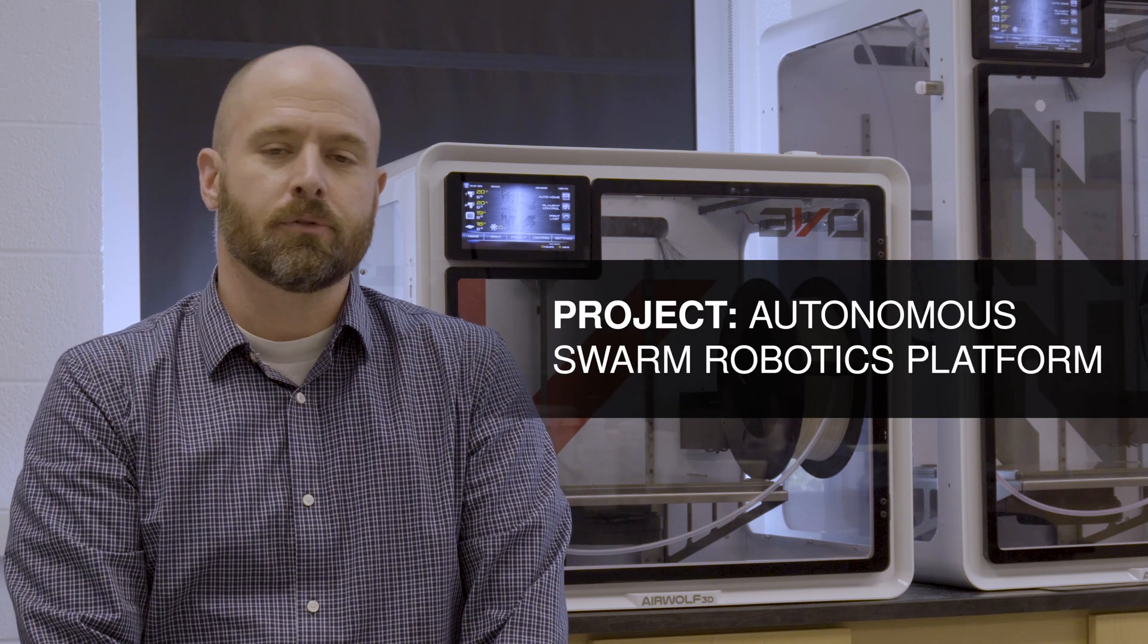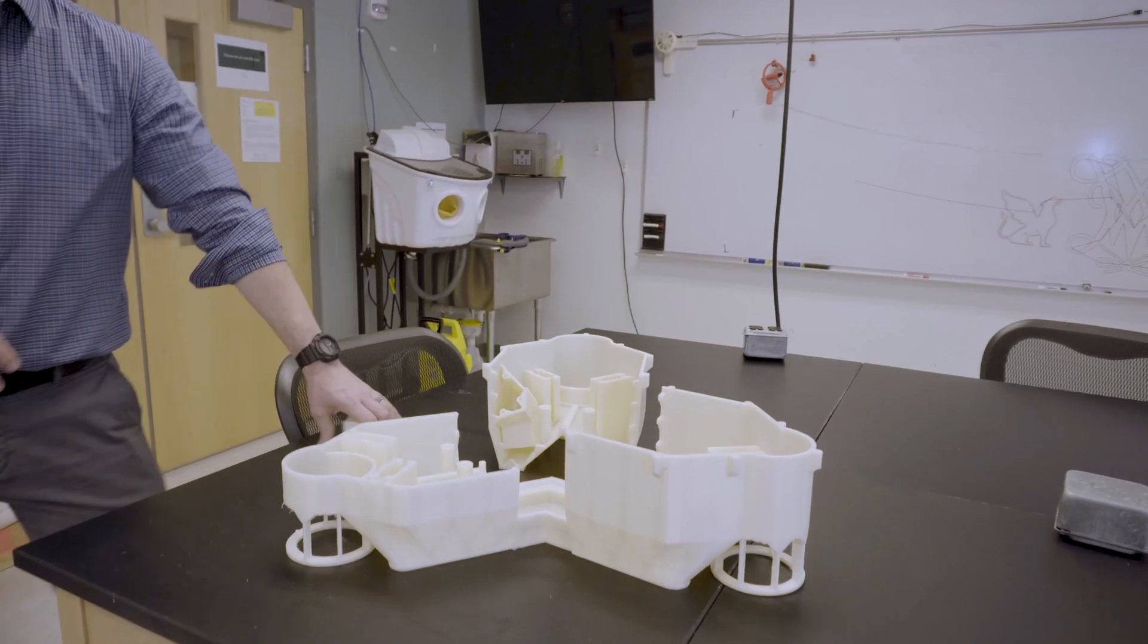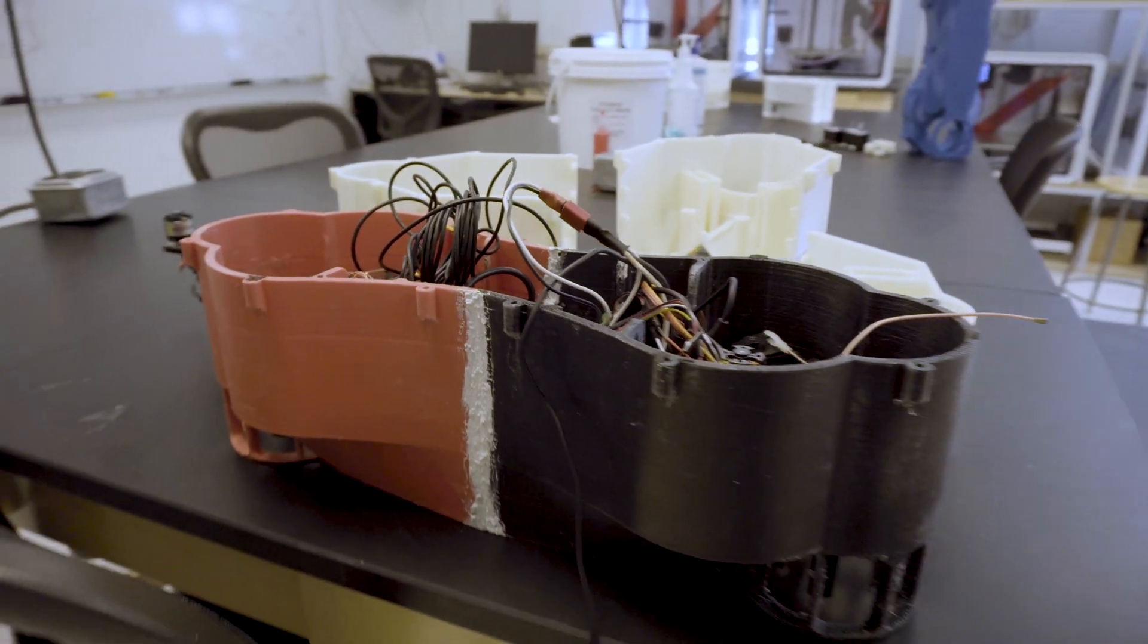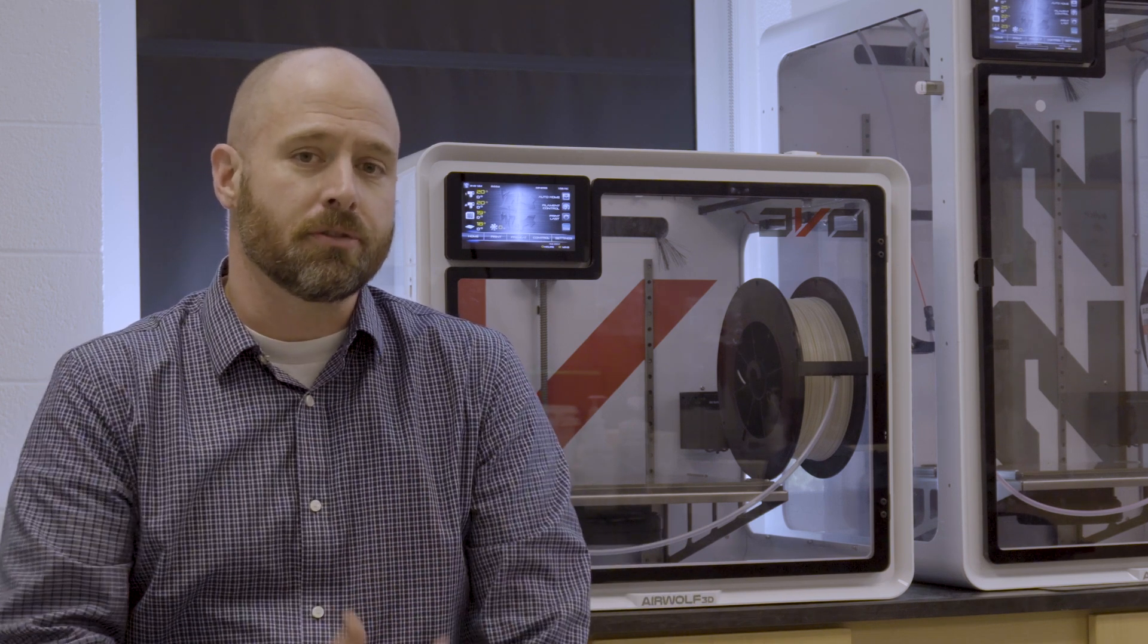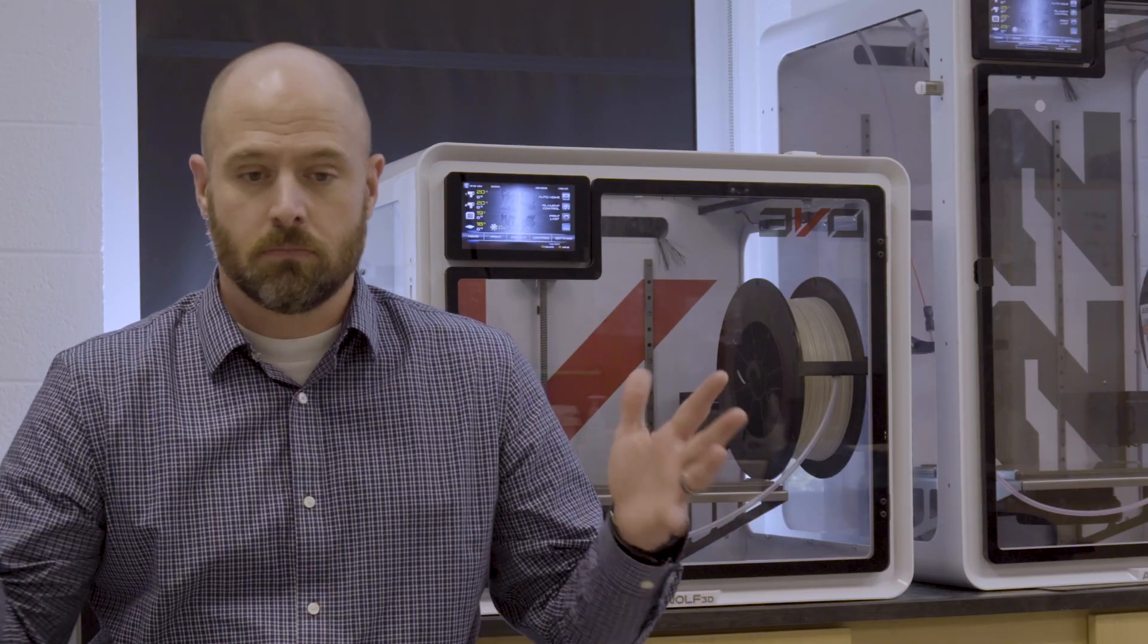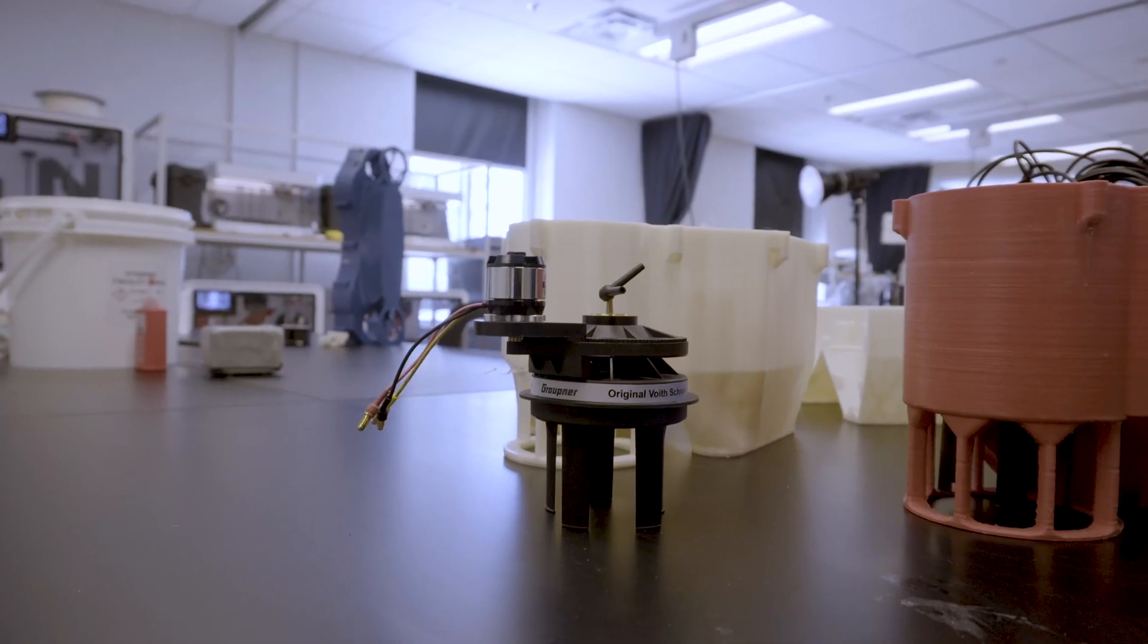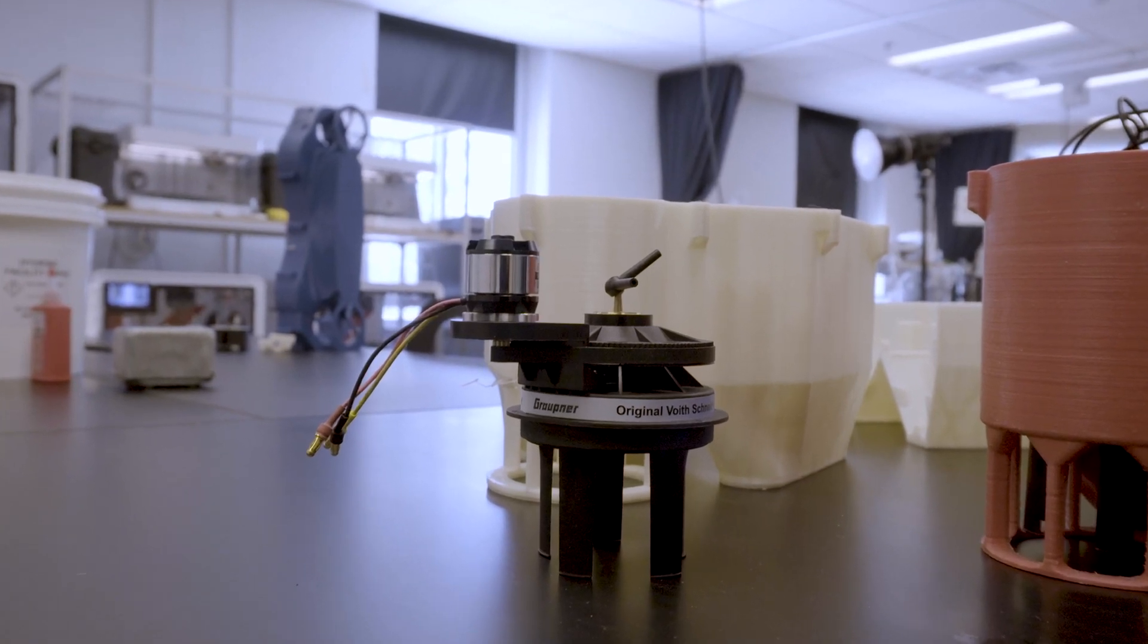One of the big efforts we have using 3D printing around here is to develop an autonomous swarm robotics platform that is surface vessels, so specifically boats, autonomous robotic boats. We've been using these 3D printers to print up to a two-foot long autonomous boat platform using a Voitschneider propulsion system that is used for research, for experience, for students, for a number of different avenues.